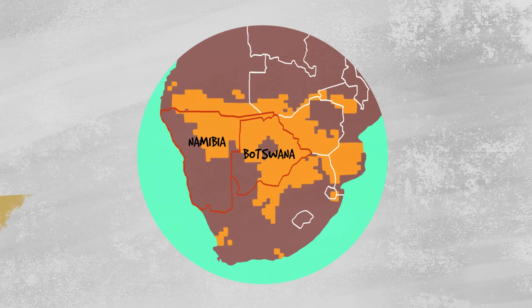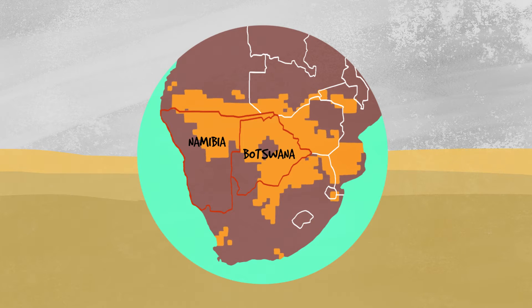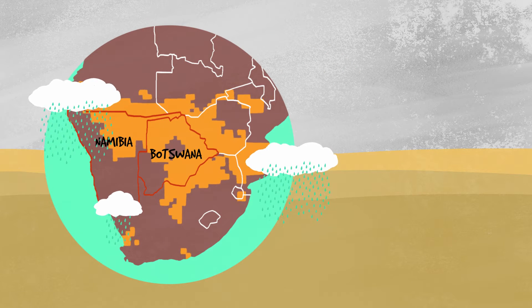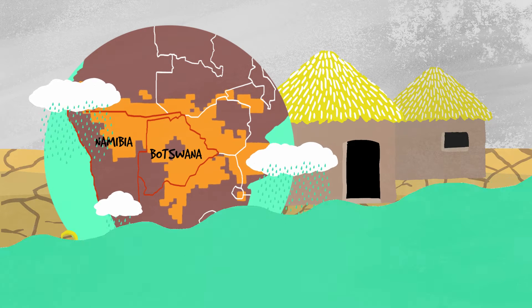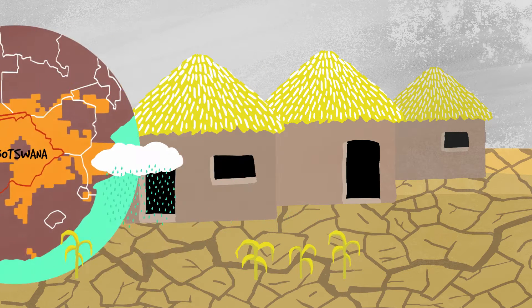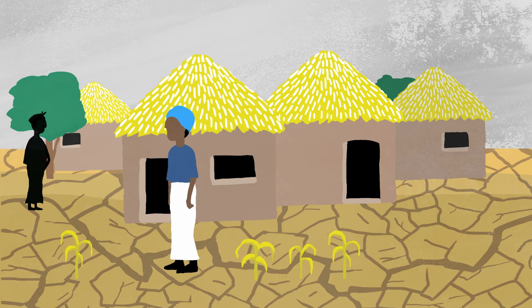The semi-arid regions of Southern Africa have highly variable rainfall, which leads to frequent droughts and flash floods. These areas are culturally and ecologically diverse, but have high levels of poverty.